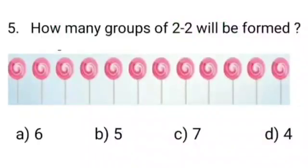Let's solve our 5th question. How many groups of 2-2 will be formed? For this question, we have 4 options. Option A is 6, option B is 5, option C is 7 and option D is 4.